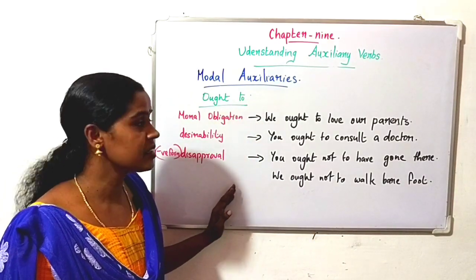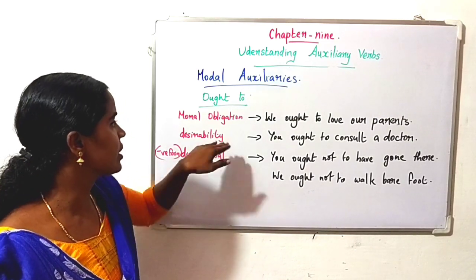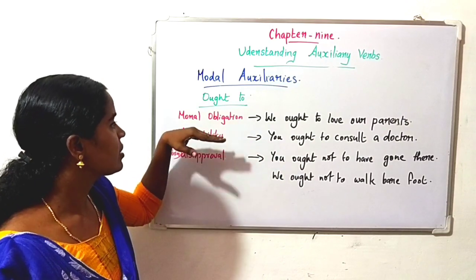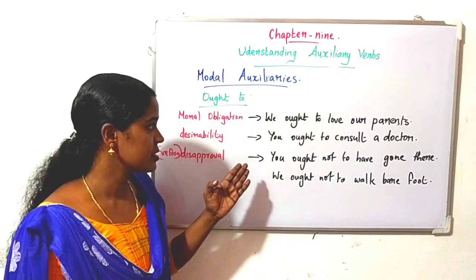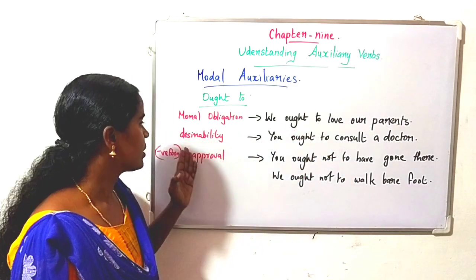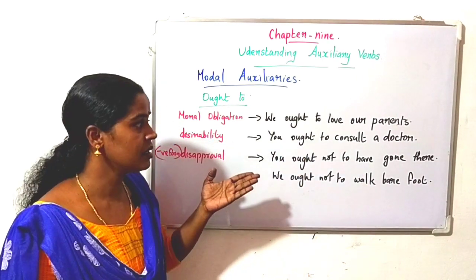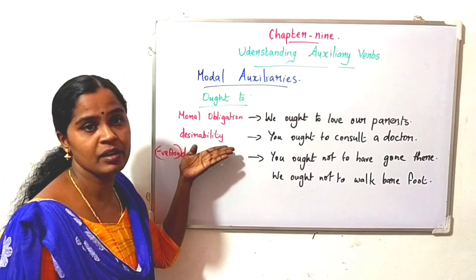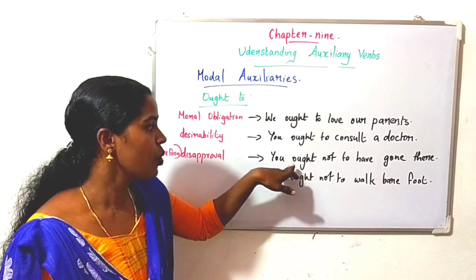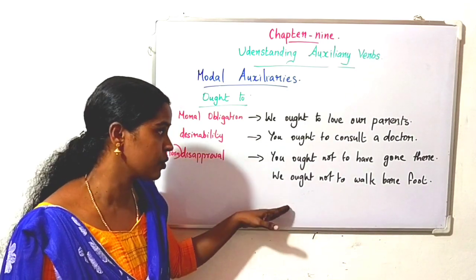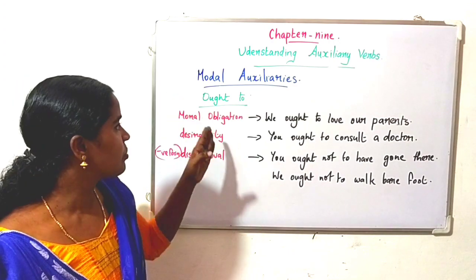Next auxiliary is ought to. It suggests moral obligation, desirability, and disapproval in its negative form. 'We ought to love our parents' expresses moral obligation — it is our responsibility. 'You ought to consult a doctor' means it is better for you to consult a doctor — that is desirability. In its negative form, ought to expresses disapproval: 'You ought not to have gone there' and 'We ought not to walk barefoot.'